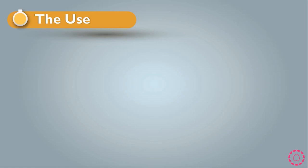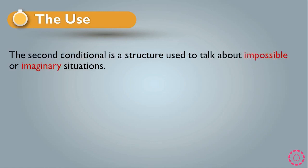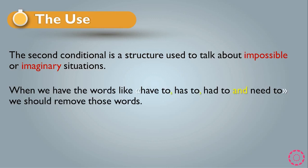First of all, we have the use. The second conditional is a structure used to talk about impossible or imaginary situations. When we want to talk about something that is impossible or imaginary, we use the second conditional. Also, when we have words like 'have to,' 'has to,' 'had to,' and 'need to' in the sentence, we have to remove them before changing to the second conditional.